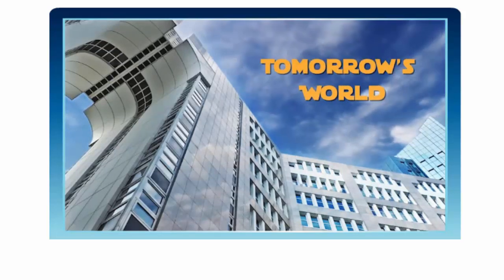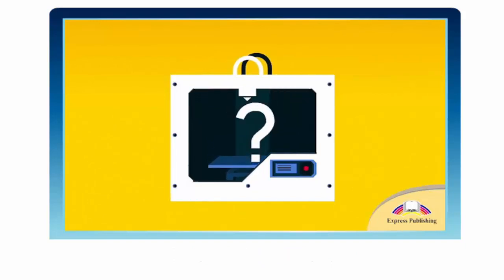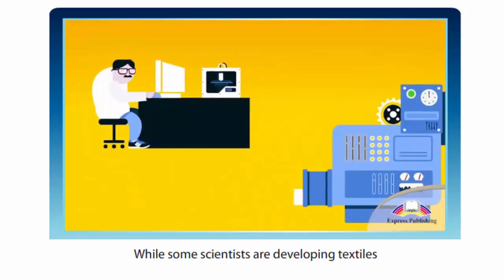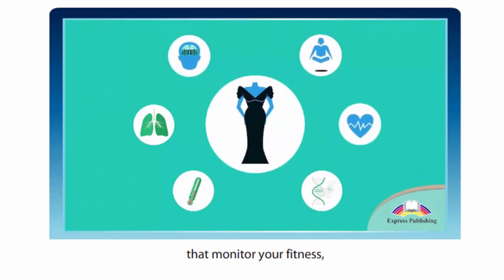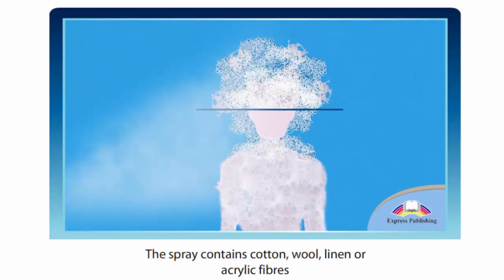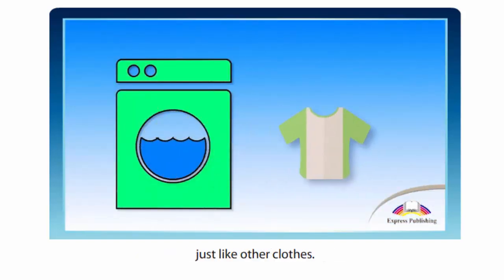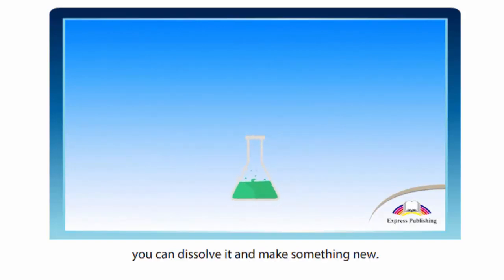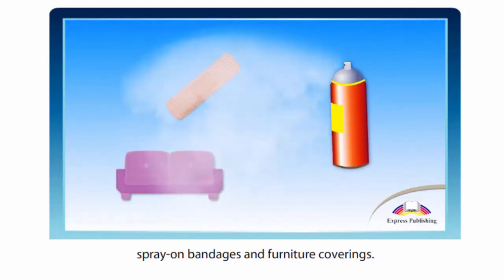Tomorrow's World. Let's take a look at what everyday life might be like in the future. While some scientists are developing textiles that allow the wearer to generate electricity as they walk, and others are working on clothes that monitor your fitness, two scientists in London have invented a spray-on fabric. The spray contains cotton, wool, linen or acrylic fibers that dry instantly on your skin and turn into garments like t-shirts or tops. You can wash it and wear it again just like other clothes. Then, when you get bored, you can dissolve it and make something new. The scientists are also looking into its use for spray-on bandages and furniture coverings.